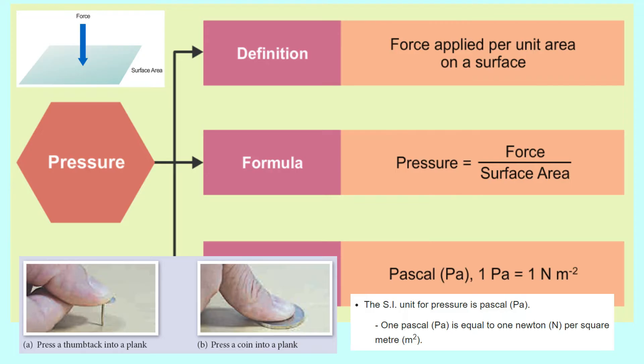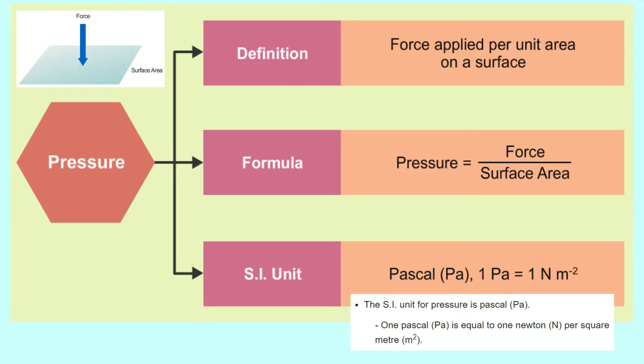Sebaliknya, daya yang sama dikenakan ke atas permukaan yang lebih besar akan menghasilkan satu tekanan yang lebih kecil. Jadi, tekanan boleh ditakrifkan sebagai daya per unit luas permukaan.